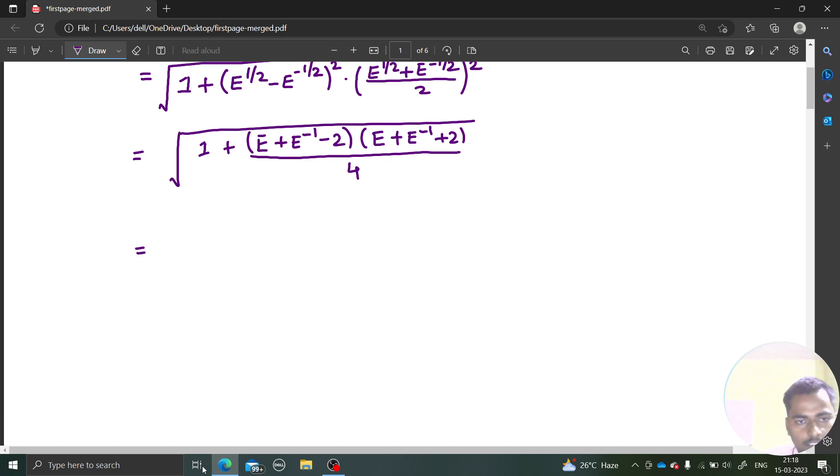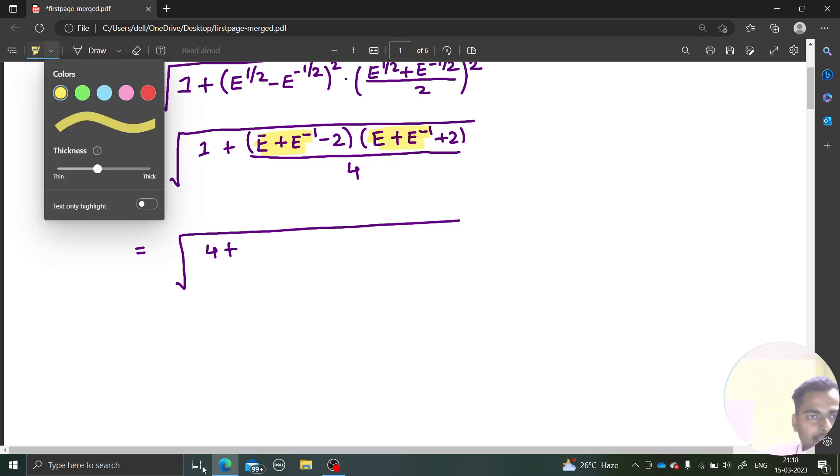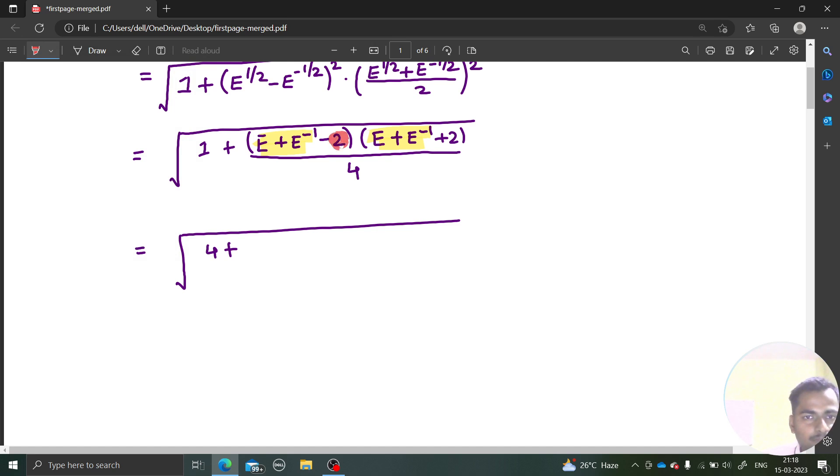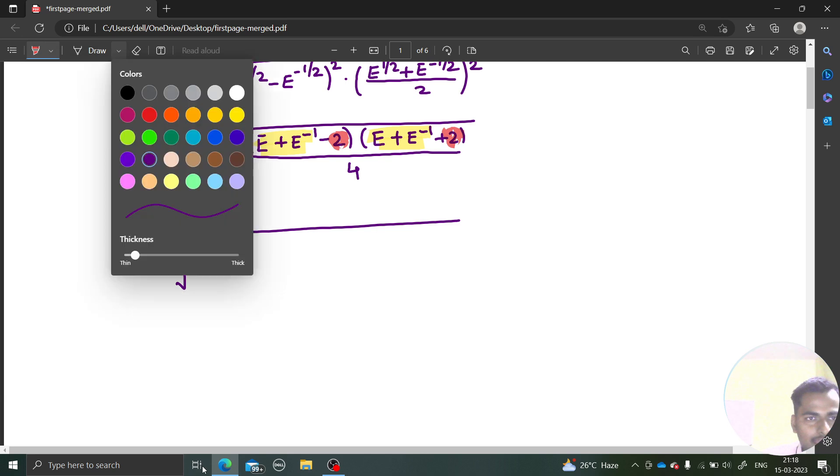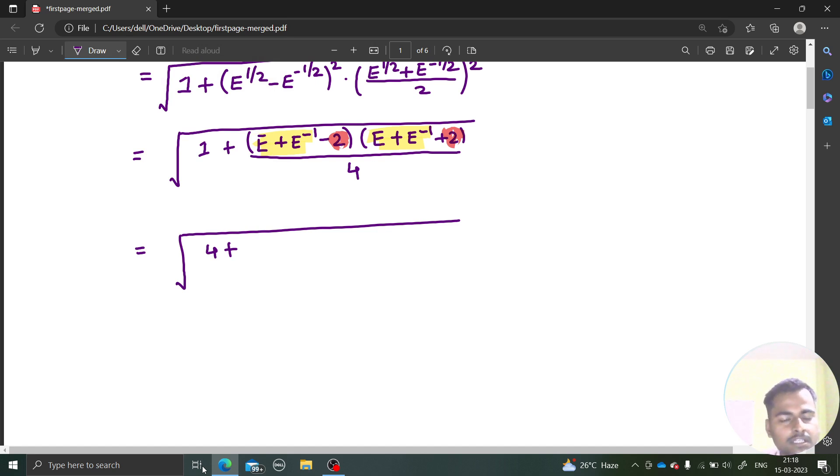You would be getting under the root 4 plus. This portion is your A and the other portion is your B. a plus b, a minus b is going to give you a square minus b square. That will give you e plus e power minus 1 square minus 2 square is 4, whole divided by 4.